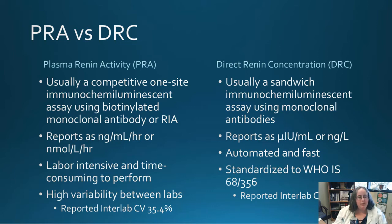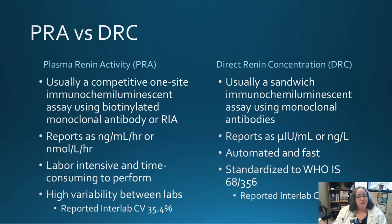The critical point is that the units are vastly different, which means you cannot compare results from PRA to DRC. You cannot compare aldosterone-renin ratios using plasma renin activity to those using direct renin concentration — they must be looked at independently.